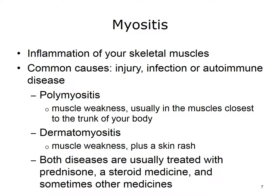Myositis is the inflammation of your skeletal muscles, which are also called the voluntary muscles — the muscles you consciously control to help you move your body. An injury, infection, or autoimmune disease can cause myositis. For example, polymyositis causes muscle weakness, usually in the muscles closest to the trunk of your body. Dermatomyositis causes muscle weakness plus a skin rash. Both diseases are usually treated with prednisone, a steroid medicine, and sometimes other medicines.